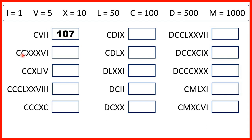Now we have two Cs, so that's 200. We have three Xs, so that's three 10s, which is 30. And we have a V and then an I, so that's 5 and then 1, which is 6. So putting that together, we have 236.